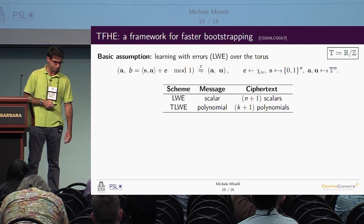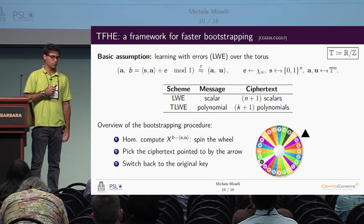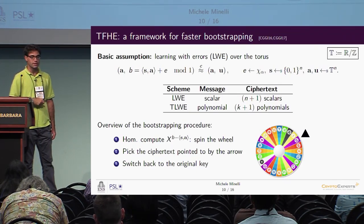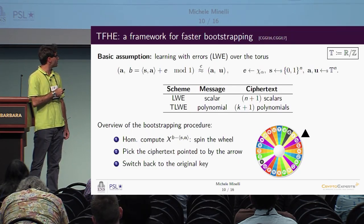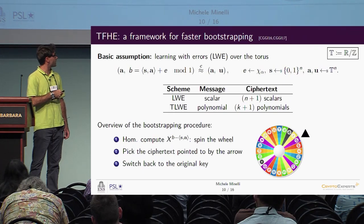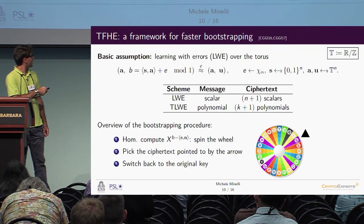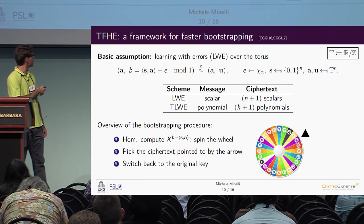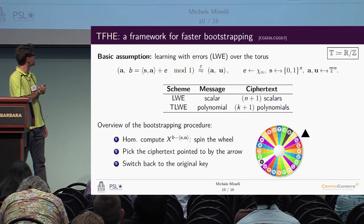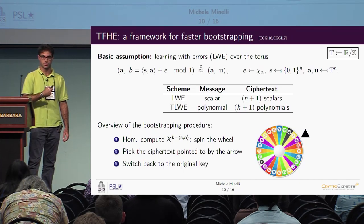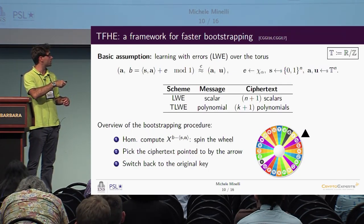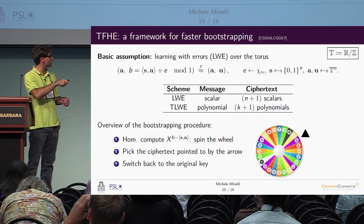Without going into the details of bootstrapping, the intuition the authors use is the wheel of fortune. When we want to refresh a ciphertext, we prepare a wheel divided into slices, each slice containing a possible result of the bootstrapping procedure. We homomorphically spin the wheel and take whatever ciphertext is pointed to at the end. Homomorphically spinning the wheel means using an encryption of the secret key S — called the bootstrapping key — instead of having direct access to S.